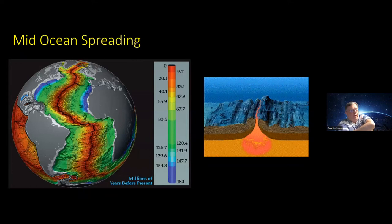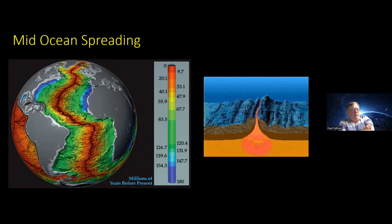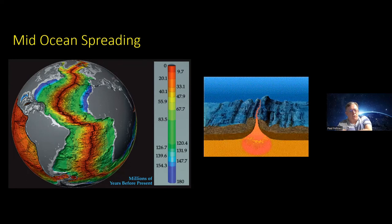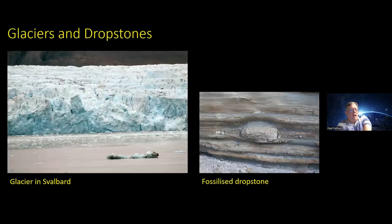Correspondingly, at the mid-Atlantic ridge, hot plumes of material from the Earth's inner core rise up, forcing plates apart and building new ocean crust — so the Atlantic is getting bigger, driving South America and Africa apart. This has been ongoing for hundreds of millions of years, and correspondingly the Pacific Ocean is shrinking. The continents are always moving around, and this will be a key part of the story.